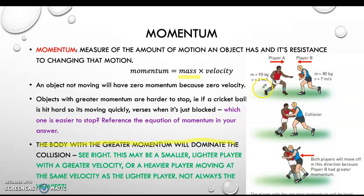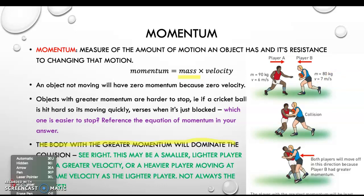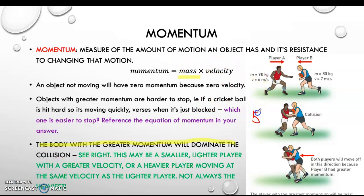Looking at this example — which I think is in your book — we've got a young man who is 90 kilos travelling at 6 metres per second, and then we've got this guy who is 80 kilos travelling at 7 metres per second. So if we do mass times velocity: 90 times 6 equals 540, and then 80 times 7 equals 560. So the blue guy has a higher momentum, and therefore when they hit each other they're actually going to go in the direction of the blue guy because he has the higher momentum.